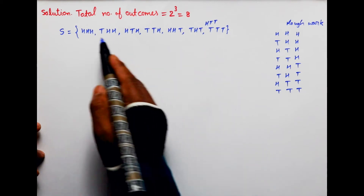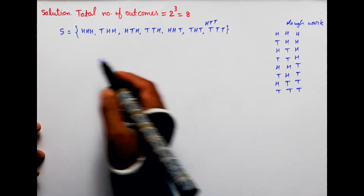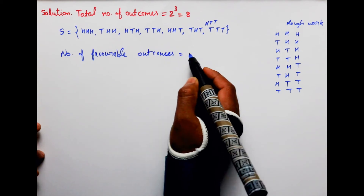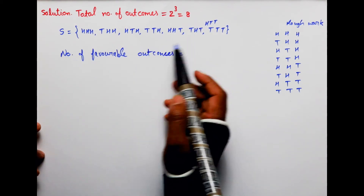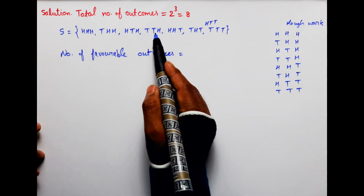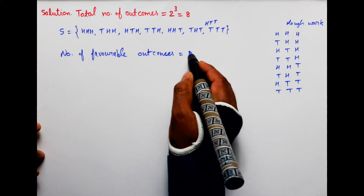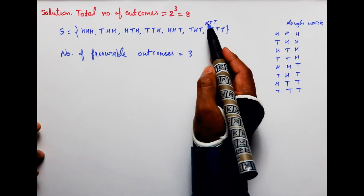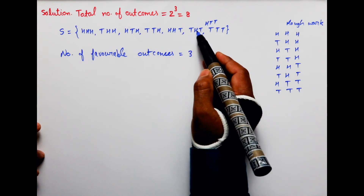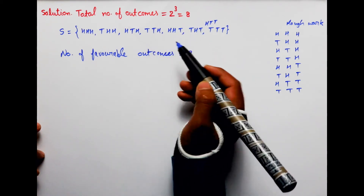Now we will check the outcomes in which we have exactly one head. Number of favorable outcomes — जिसमें बच्चों सिर्फ एक head आ रहा होगा। एक तो यह है, एक यह है, और एक यह — one, two, and three। जिसमें सिर्फ एक head है, वो 3 outcomes हैं।